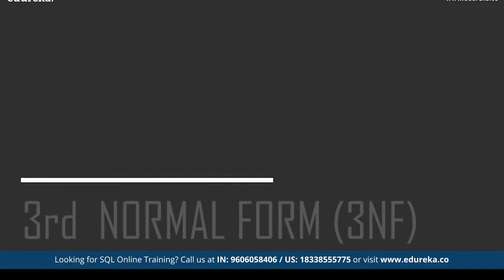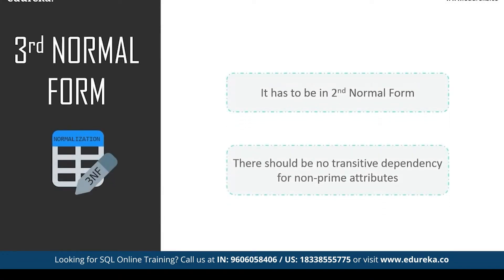Third normal form is used in normalizing a table to reduce duplication of data and ensure referential integrity. A table must be in second normal form, and no non-prime attribute should be transitively dependent on any other non-prime attribute. In simple terms, if C is dependent on B and B is dependent on A, then transitively C is dependent on A — this should not happen in third normal form. All non-prime attributes must depend only on the prime attributes.